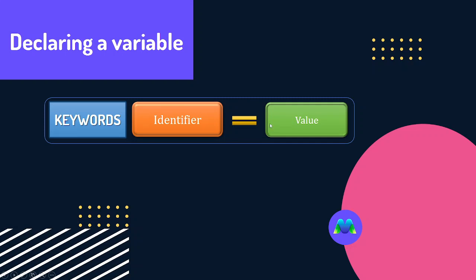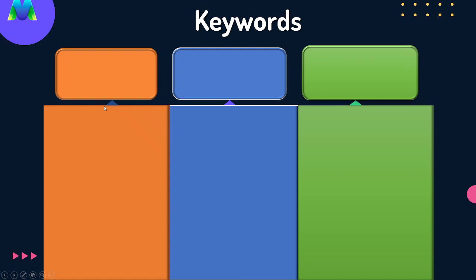I hope you will enjoy this coding video. So, what are the keywords in JavaScript? Let's see JavaScript by default. There are three types of variable declarations in JavaScript: var, let, and const.